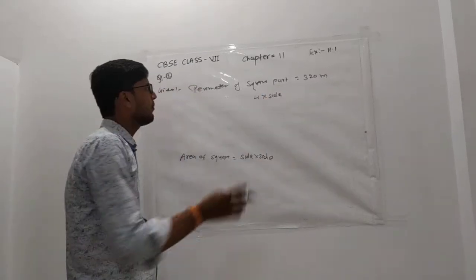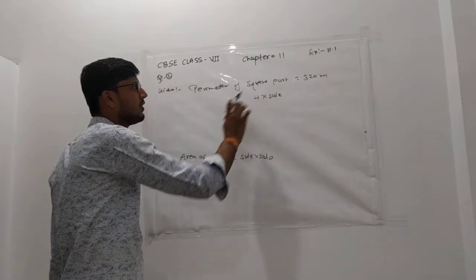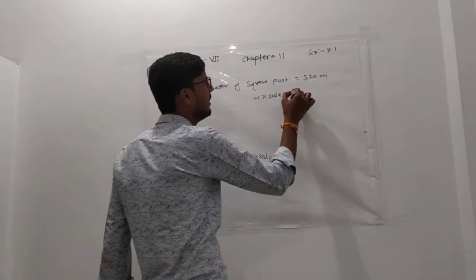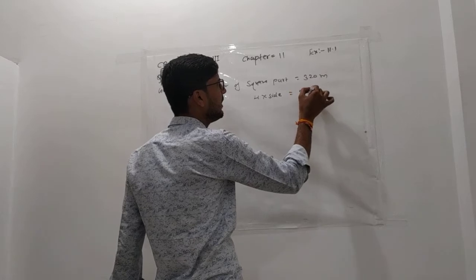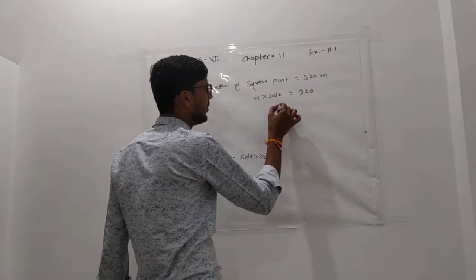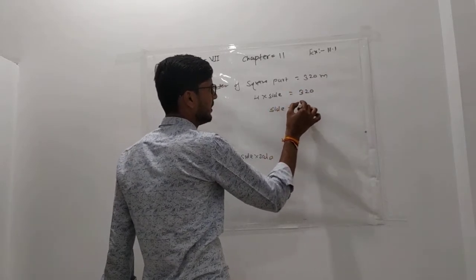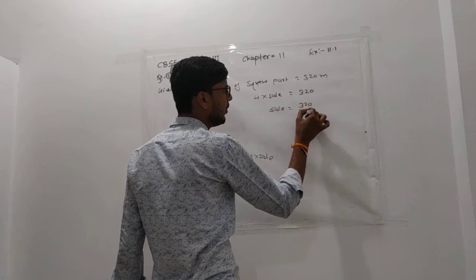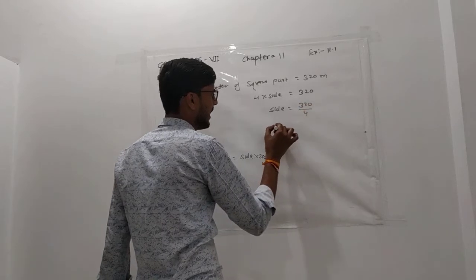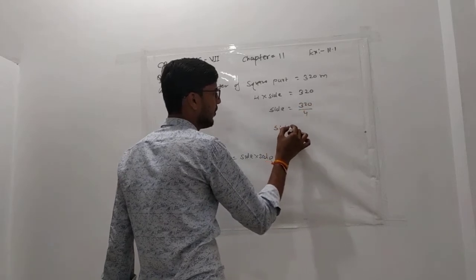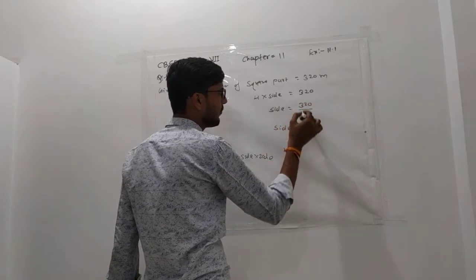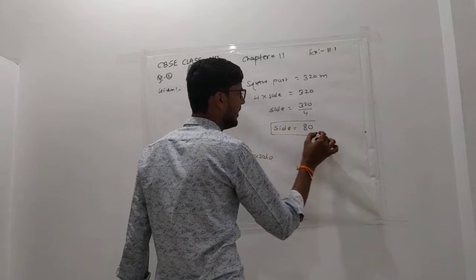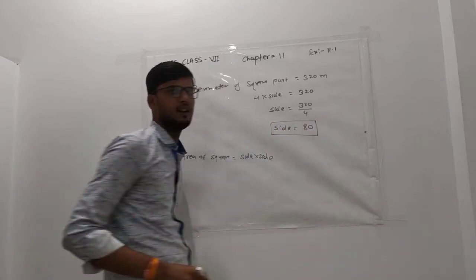This is the formula: perimeter of square is 4 into side equals 320. So simply side equals 320 upon 4. Dividing 320 by 4 gives 80. So side is 80 meters.